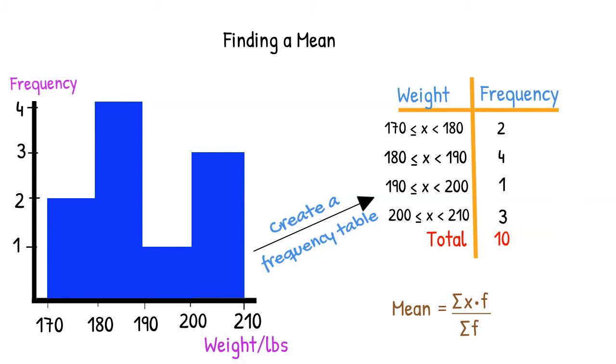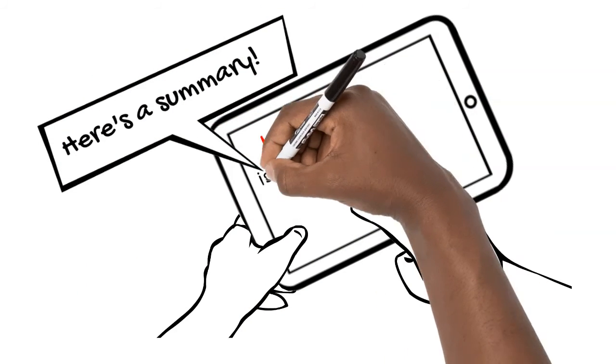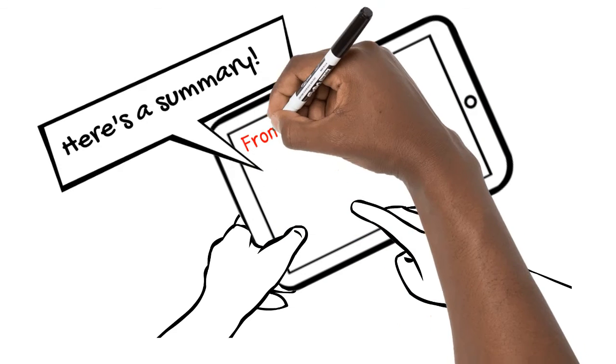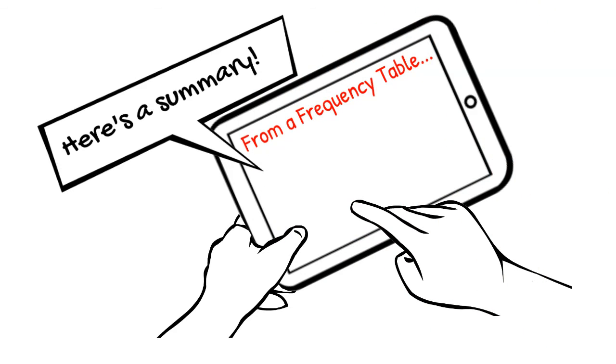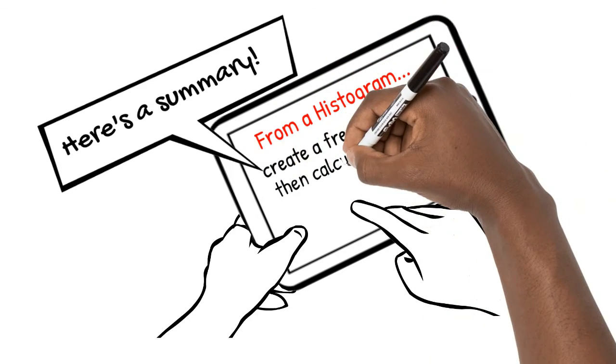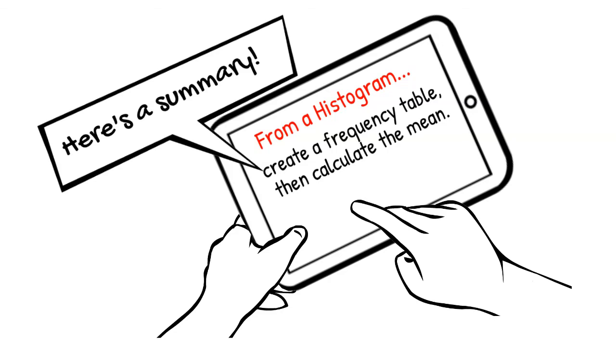Here's a summary of what we've learned: Mean is the sum of the numbers divided by the number of numbers. From a frequency table, mean is equal to the sum of the values times their frequencies divided by the sum of the frequencies. From a histogram, create a frequency table, then find the mean.